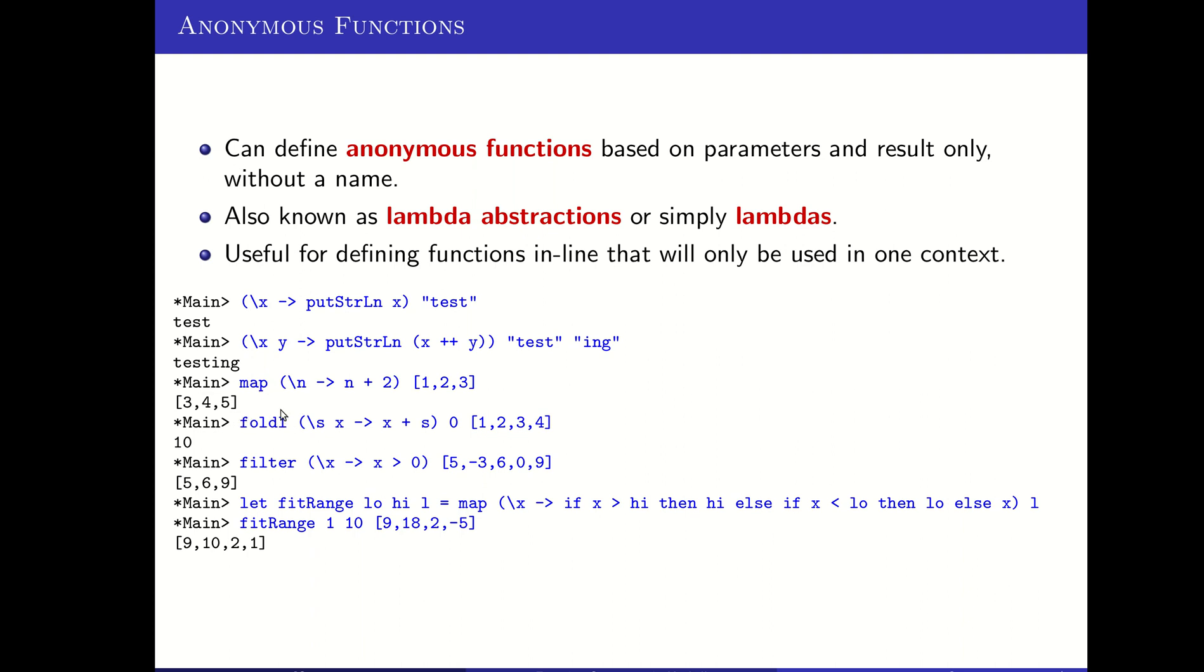So similarly, this fold is going to need to take two parameters, the accumulating parameter and the parameter for the new value that comes from the list. The order on these will matter, just like any time that you're using a two parameter function for fold, and so naming them can be very important. And here it takes that new value x and adds it with the accumulator s. And again, there are other ways that I could have done this exact same fold, but it shows you how you could write a specialized function right there in line to do the fold on the list.